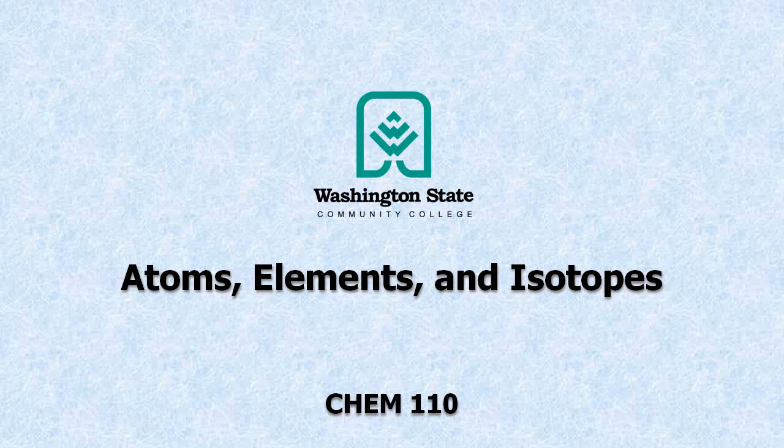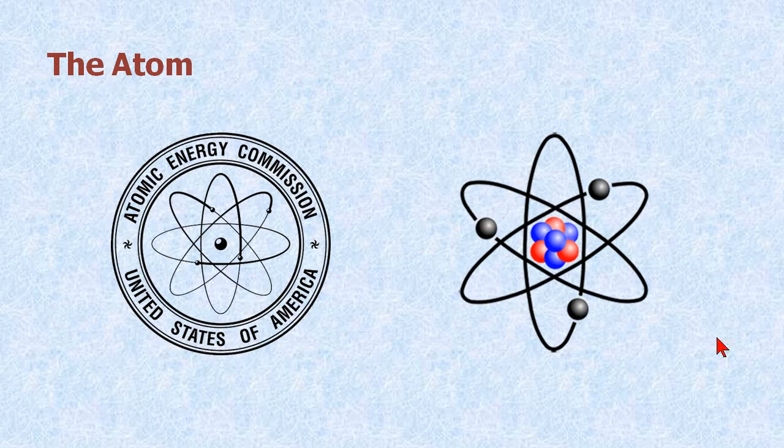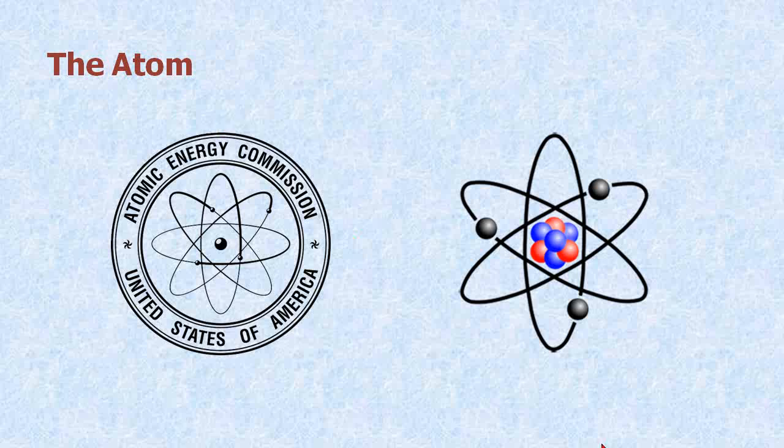This screencast is on atoms, elements, and isotopes. Unless you've been living in a fallout shelter, you probably recognize some sort of nuclear symbol, which is just an atom here. This is the Atomic Energy Commission symbol. This is just an atom with the nucleus here composed of neutrons and protons, and you have electrons spinning around.